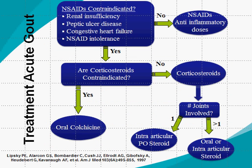Here is the treatment algorithm for acute gout. First, confirm the diagnosis clinically — the patient should meet at least 6 of the 11 criteria. The confirmatory diagnosis is by aspirating joint fluid and demonstrating negatively birefringent urate crystals under a polarizing light microscope. Once confirmed, assess whether the patient is suitable for NSAID use, checking for contraindications such as renal insufficiency, peptic ulcer disease, CHF, or NSAID intolerance.